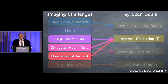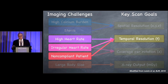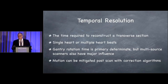Temporal resolution makes a big difference for people who have high heart rates — and we never accept a high heart rate without doing our best pharmacologically to reduce it. We'll have a talk about the use of beta blockers to do that, which is very important. Irregular heart rates, patients with atrial fibrillation, can be a challenge. Non-compliant patients who are moving a little bit — the higher the temporal resolution, the better chance we have of freezing that motion.